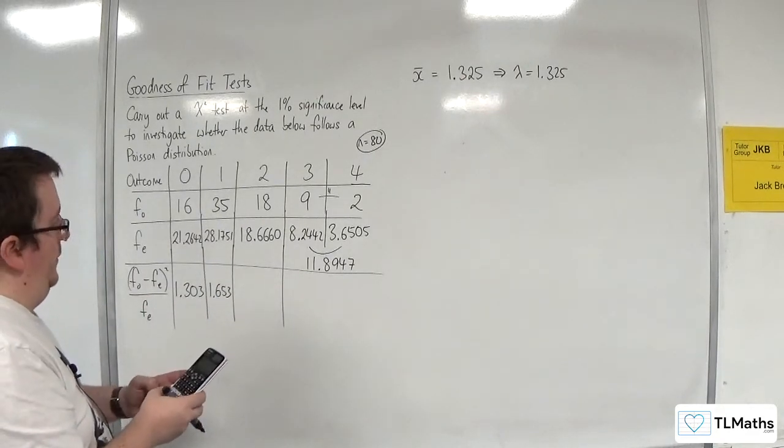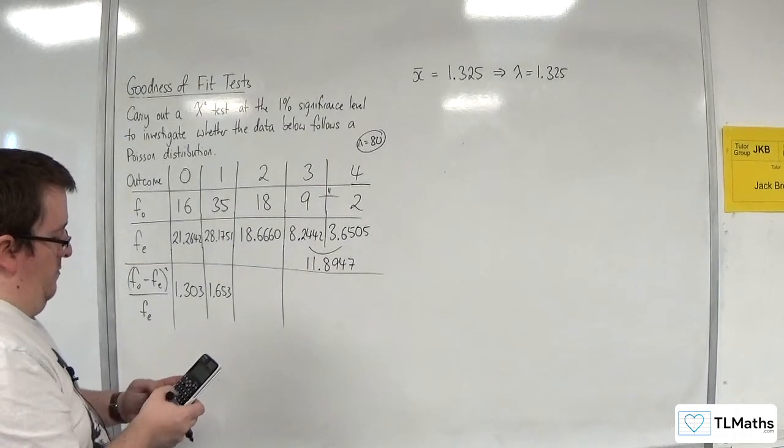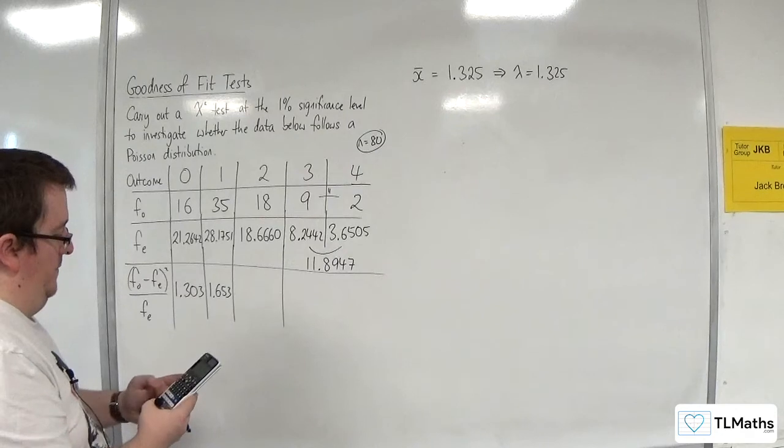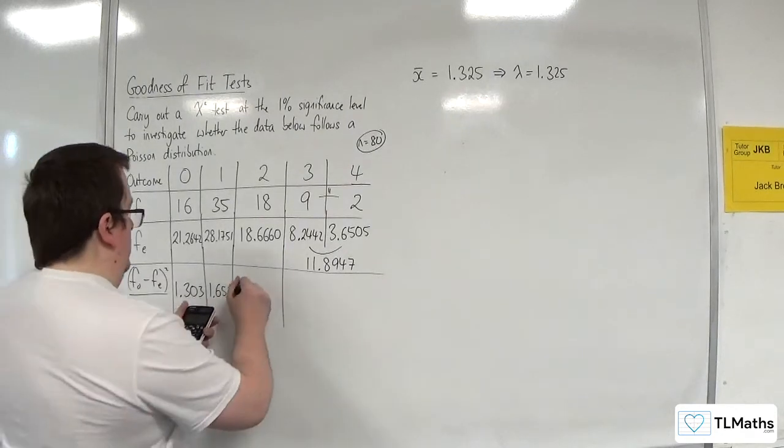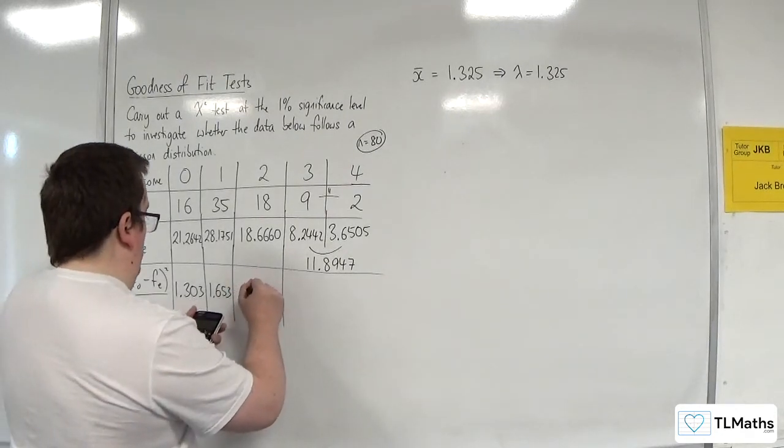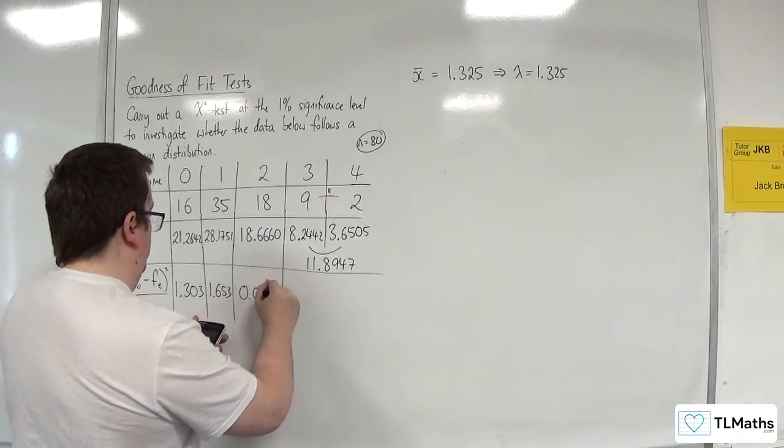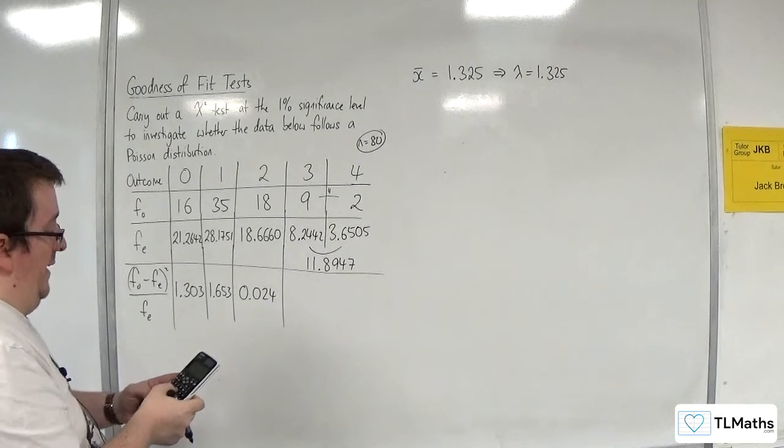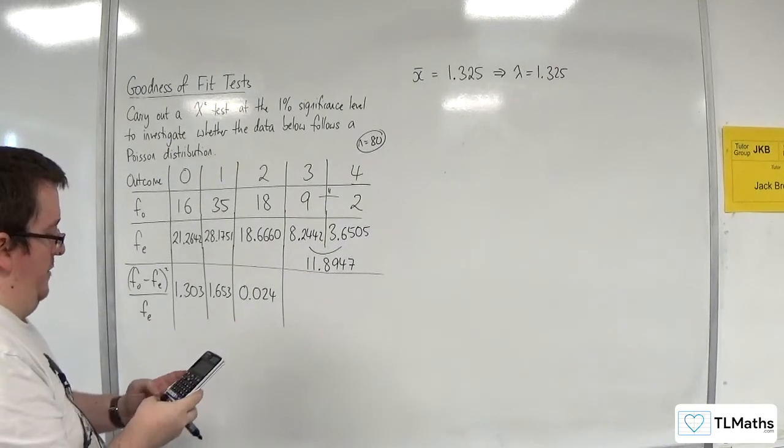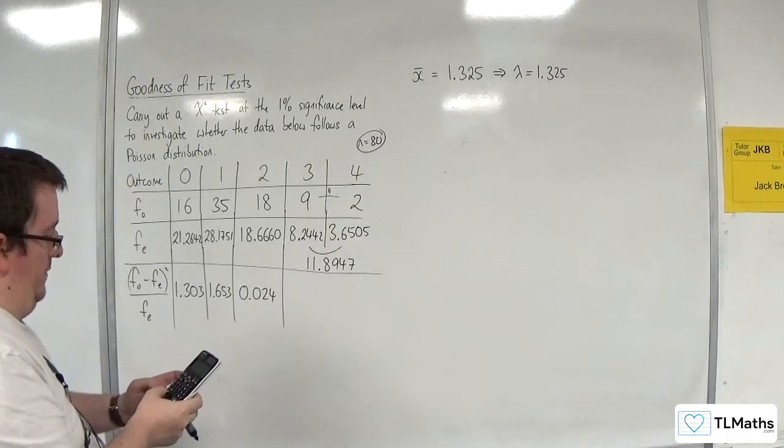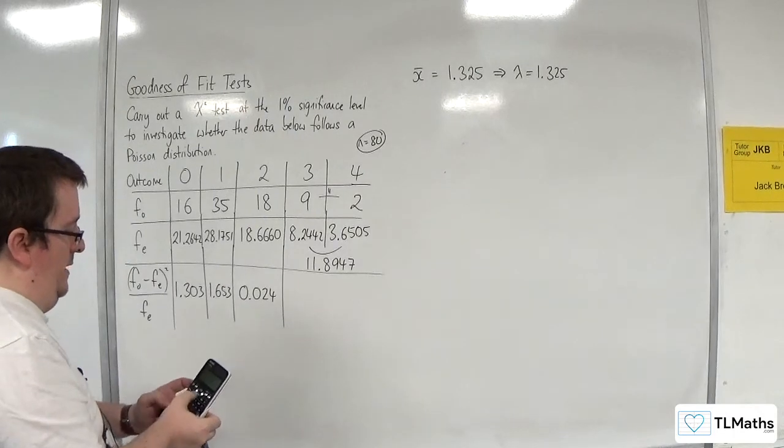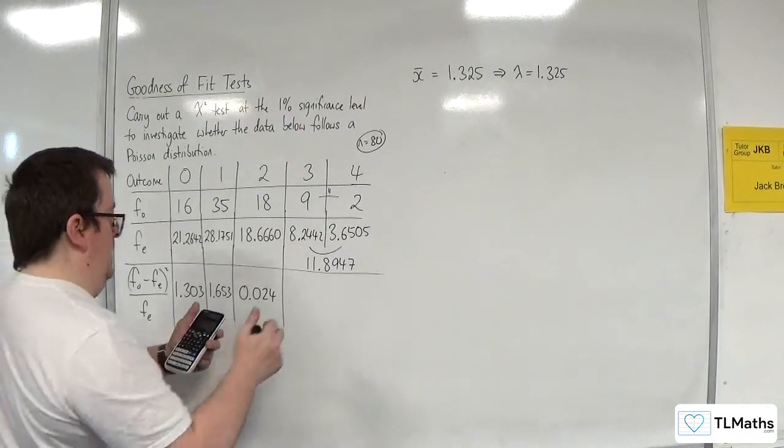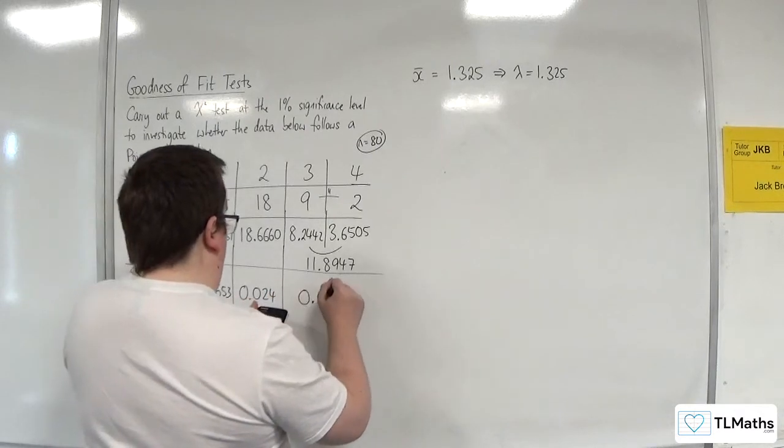Then 18 take away 18.6660, squared, divided by 18.6660, 0.024. And then we've got, remember it's 11, take away 11.8947, squared, divided by 11.8947, and we get 0.067.